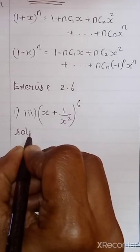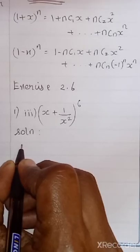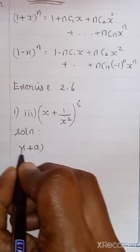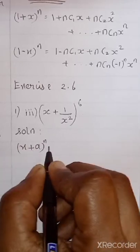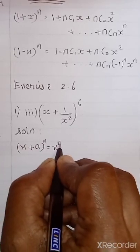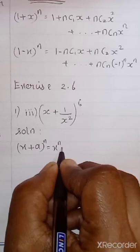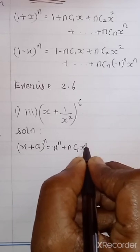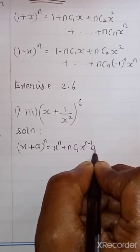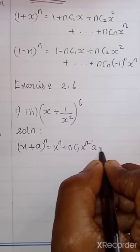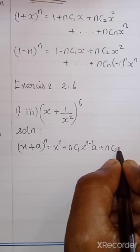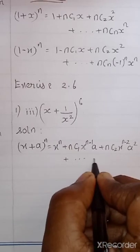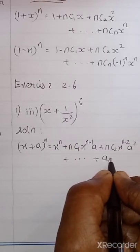Let us get into the solution. First, we write the formula, then it is easy to proceed. What is the binomial formula? X plus A power N equals X^N plus NC1·X^(N-1)·A plus NC2·X^(N-2)·A² and so on, with the last term being A^N.